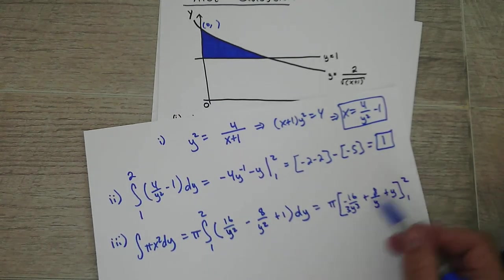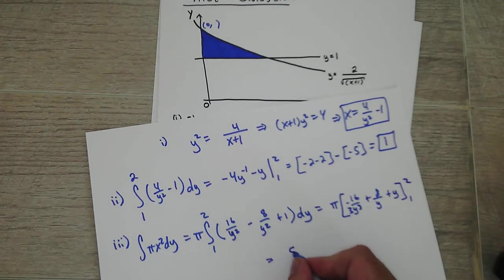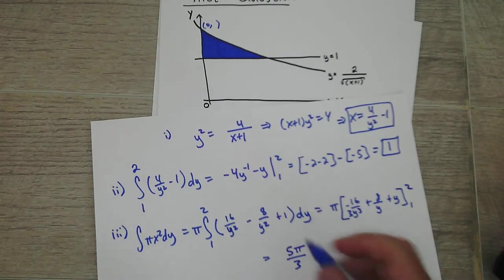Plug in your 2 there, get a number, subtract it. Plug in 1. And you'll get - you just leave the pi as pi - 5 thirds pi. That's what you should get.